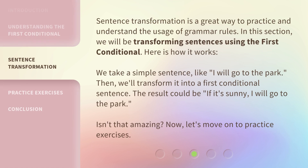Sentence transformation is a great way to practice and understand the usage of grammar rules. In this section, we will be transforming sentences using the first conditional. Here is how it works: we take a simple sentence, like 'I will go to the park,' then we transform it into a first conditional sentence. The result could be: if it's sunny, I will go to the park. Isn't that amazing? Now, let's move on to practice exercises.